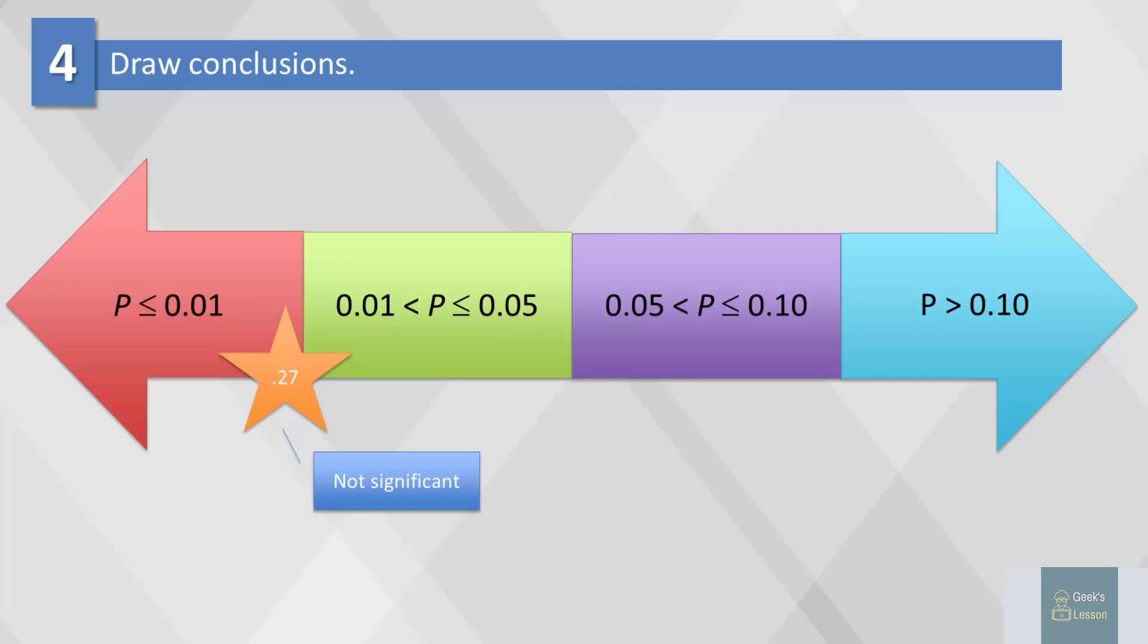As an example, a p-value of .27 would not be significant against H0. A p-value of .01, on the other hand, would be highly significant against H0.